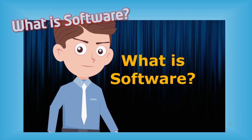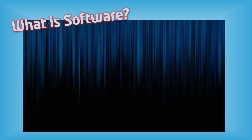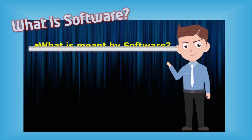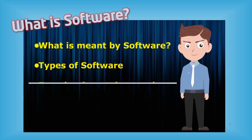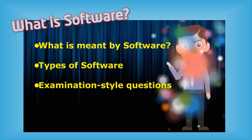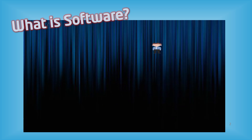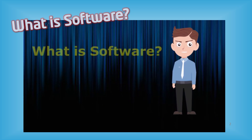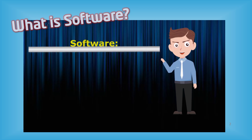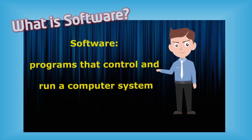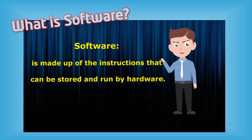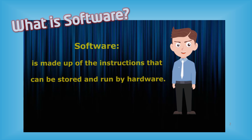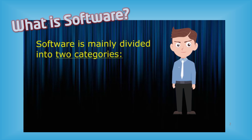What is software? In this video we will cover the following: what is meant by software, types of software, and examination style questions. Software refers to all programs that control and run a computer system. Software is made up of instructions that can be installed and run by hardware.